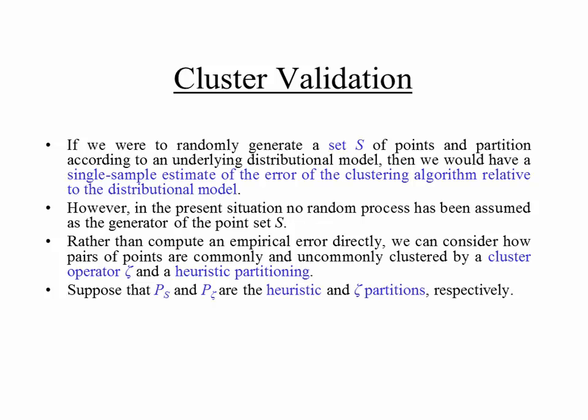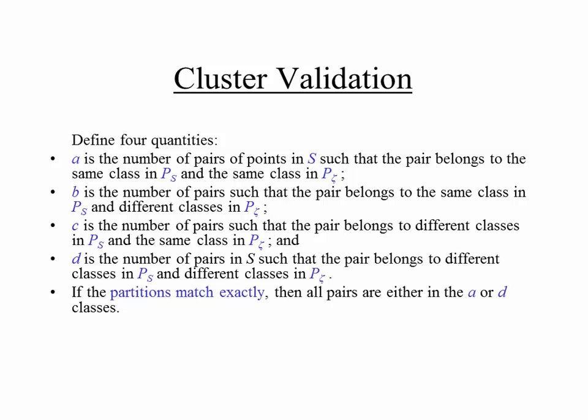Instead, we'll look at heuristic measures used for evaluating clustering quality. These can be divided into two categories: internal validation methods evaluate clusters based only on the data itself, while external validation methods evaluate clusters based on pre-specified information — such as knowing the two different lymphoma types. We have two different partitions PS and P-zeta, and we want to see how good they are relative to each other.